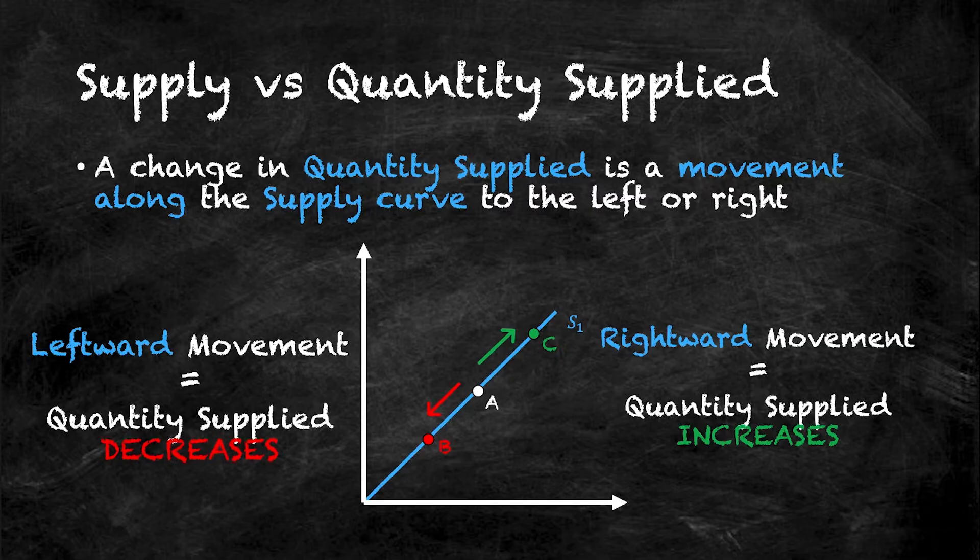Once again, I'm on the same supply curve S1, so I know that there must be a change in quantity supplied and not a change in supply.